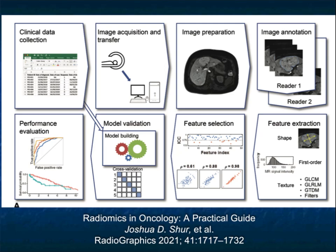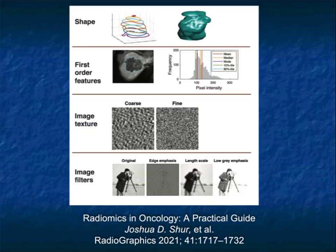In this article by Sure, published a few months ago in Radiographics — a very good article worth looking at — you can see how they talk about the chart from clinical data collection to image acquisition and transfer, image prep, annotation, feature extraction, feature selection, model validation, and performance of validation — all of the steps necessary in radiomics. In radiomics we talk about different features: shape, first order features including mean, median, and mode, image texture, and all sorts of filters that can be applied to data.